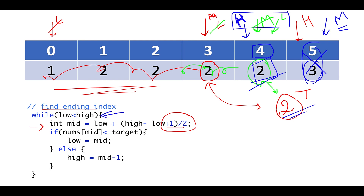Once this loop breaks, you can simply check the value for the low or high pointer — both will give you the rightmost index at which 2 occurs. We exclusively added that extra 1 divided by 2 while calculating the middle point so that our algorithm gets biased towards the right. In case you remove this value, it will go into an infinite loop. You can try it yourself and you will realize that if we don't add this extra biasing, the algorithm will fail. Without further ado, let's quickly walk through the coding section.